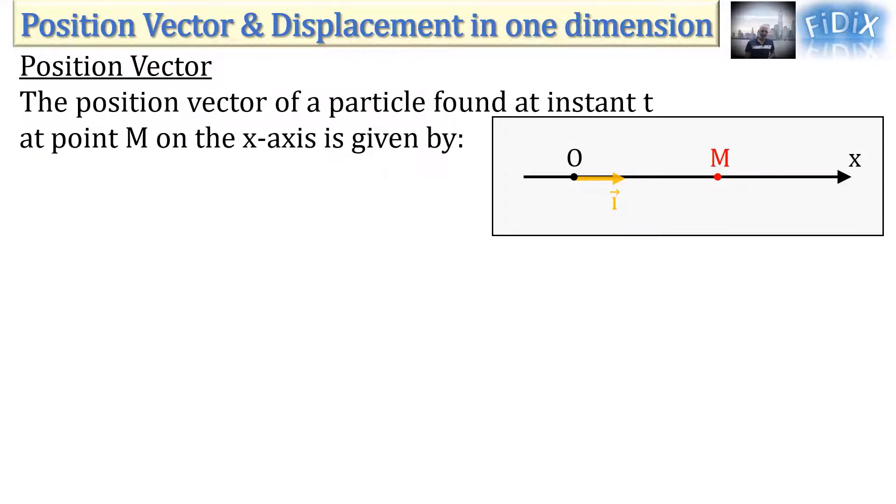In this video we will talk about the position vector and the displacement in one dimension. The position vector of a particle found at instant T at point M on the x-axis is given by the vector joining the origin O of the axis to the position M of the particle at that instant, and is given by the equation R equals vector OM equals XI, where X is the abscissa of M and I is the unit vector in the direction of the x-axis.